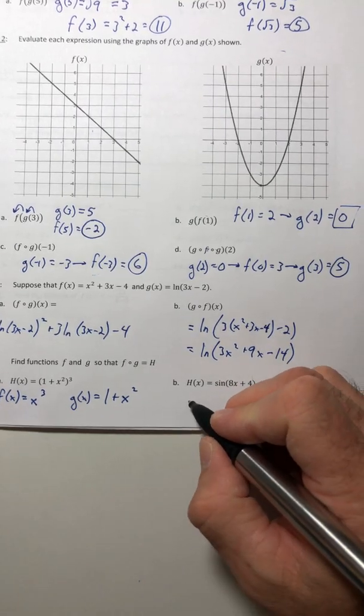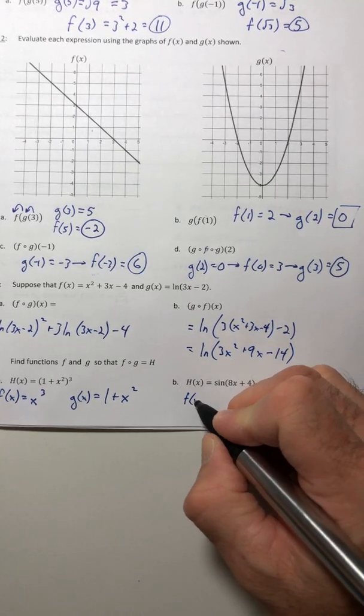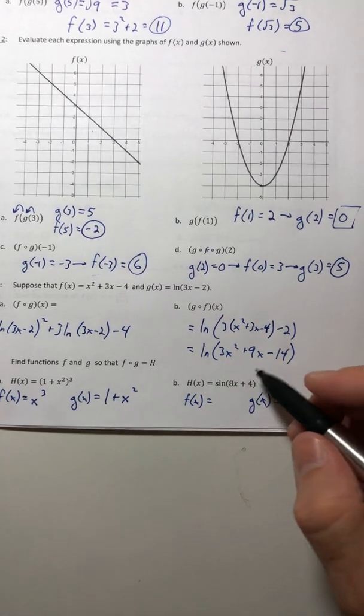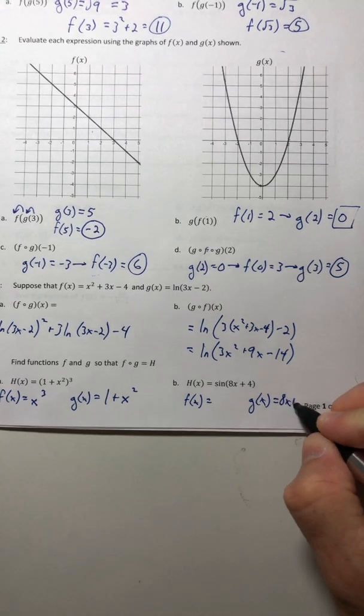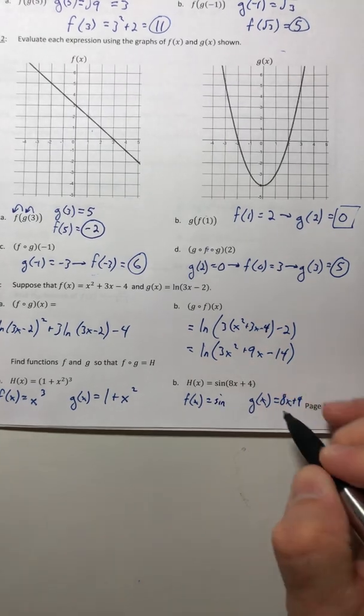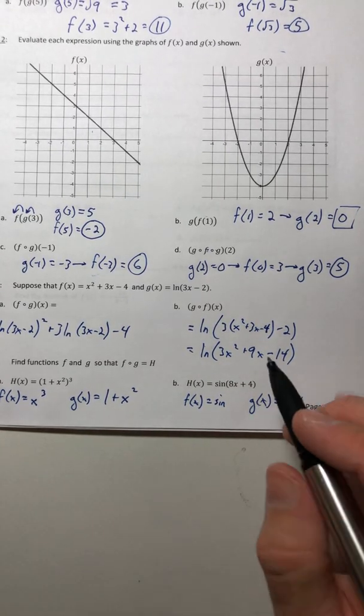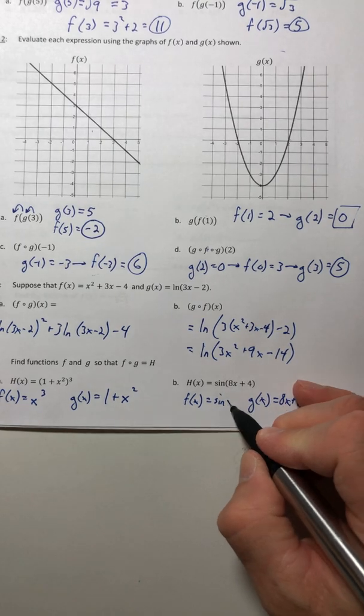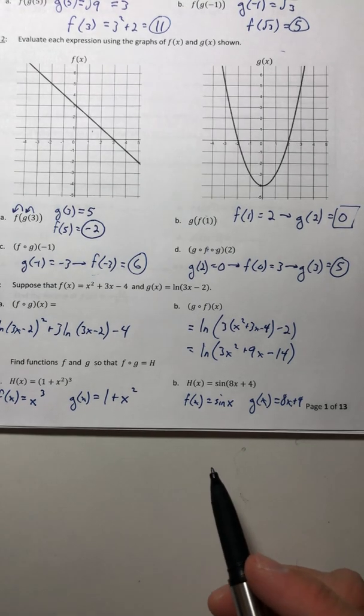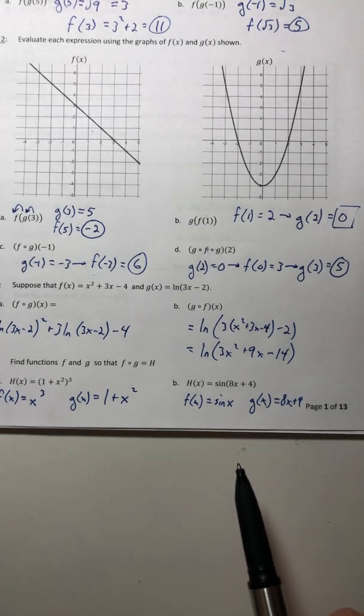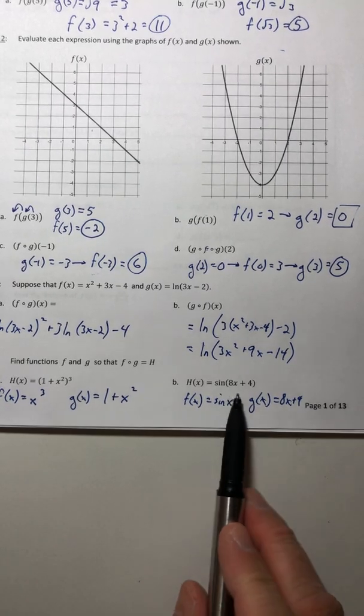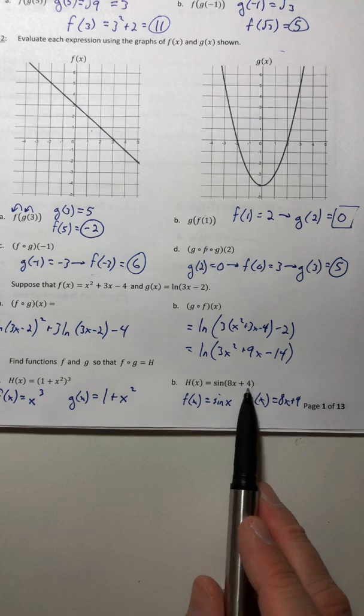For part b, I'm going to let the g function be whatever's inside. In this case, the angle. So that would mean the f is the sine. I can't just leave it just a sine, it has to be sine of something, so sine of x. Those are pretty simple. There are other ones you could do. There's probably an infinite amount of answers you could give, just as long as it works. If you stuck this function into f and get this as an answer, you're good to go.